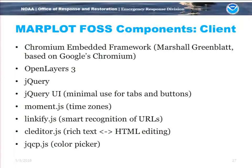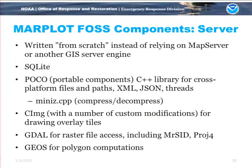Reviewing the components used: on the client side, the Chromium Embedded Framework, OpenLayers 3 (which we got working with Google Tiles — a bit of gymnastics), and jQuery plus other client-side libraries. On the server side, the big step was not relying on MapServer or another GIS engine but rolling our own. SQLite for the database, the POCO library, the CImage library for fast drawing — we actually get faster drawing times than MapServer because we customized it to our needs — and the GDAL library for raster images and Geos for polygon computations.